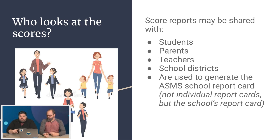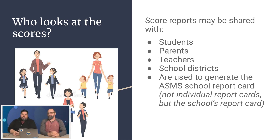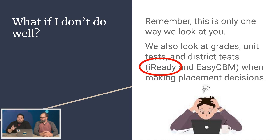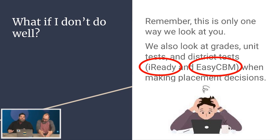Who looks at the scores? Students get the scores. Parents, teachers, school districts — we use this to generate a school report card. We have schools in the district targeted by the state because they look at OSAS scores and say there's an area you need to work on. This is only one way we look at you. We also use iReady scores and EZCBM scores. For language arts we look at OSAS and EZCBM; for math we look at OSAS and iReady. You might have a bad day, so putting all our eggs in one basket is not a good idea. We need samplings of how you're doing along the way.